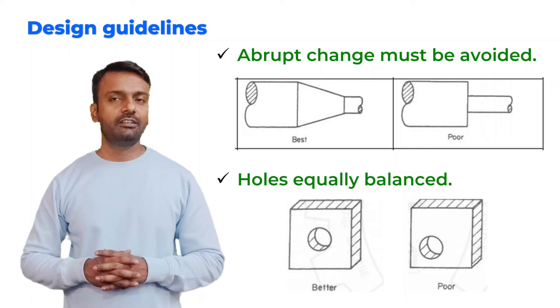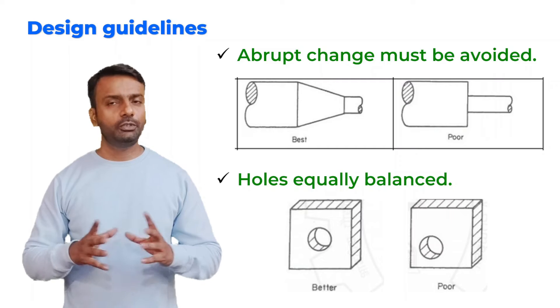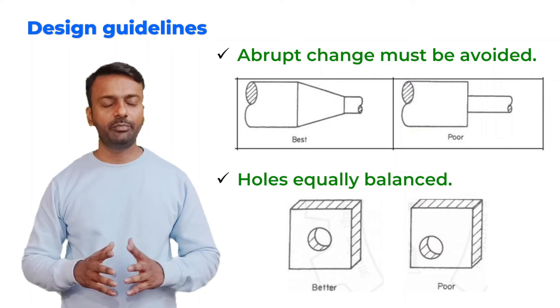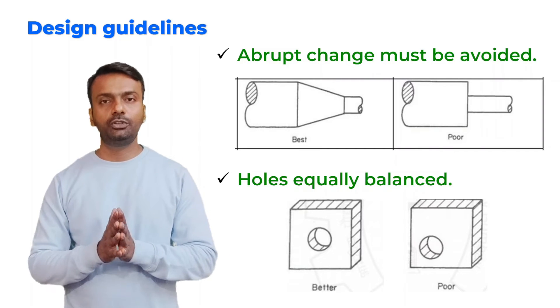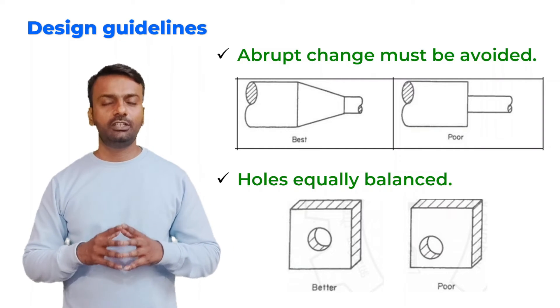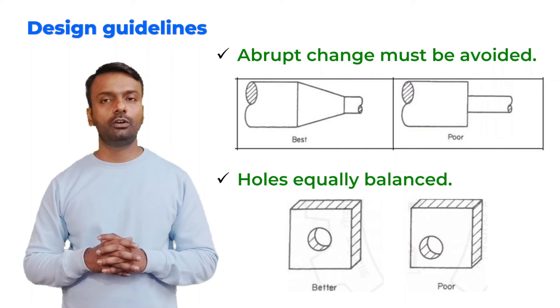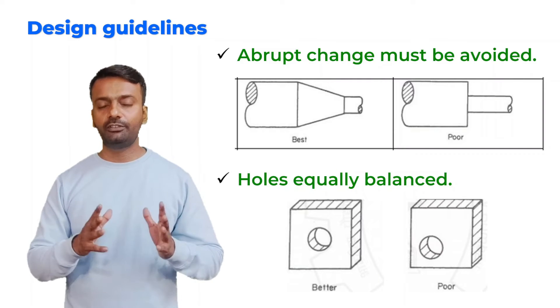There are some design guidelines which we need to follow while we are making the samples. If we don't follow these guidelines, we might have problems while doing heat treatment and then we will have all these sorts of defects. Firstly, we should not have any abrupt change in the design. The design should be very smooth. Abrupt change will create different areas where the heat treatment will not be proper and it will create a problem.